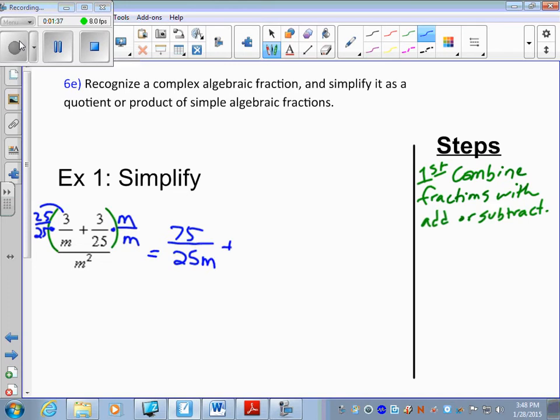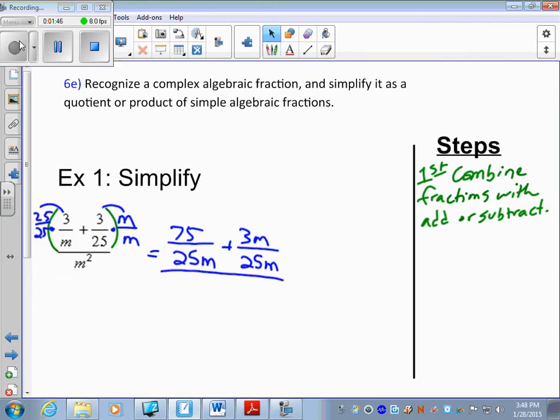I have 3 times m, 3m, over 25 times m. This is still all over m squared. But I'm not really worried about the m squared right now, I'm combining the numerator at one fraction.